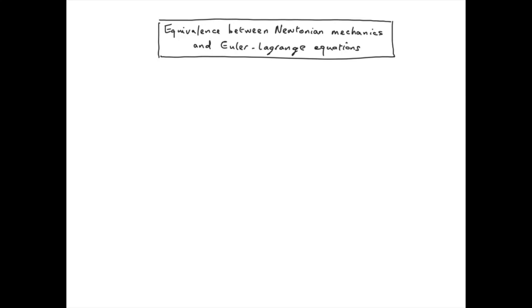We can generalize to three dimensions. In this case, the Lagrangian becomes the kinetic energy minus potential in three coordinates. We have three Euler-Lagrange equations, one per dimension.